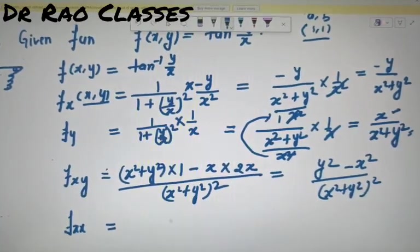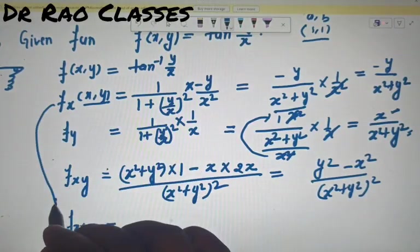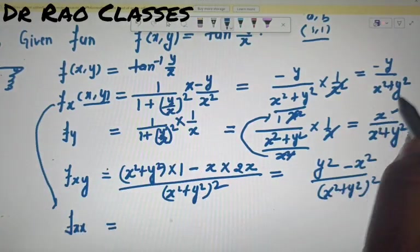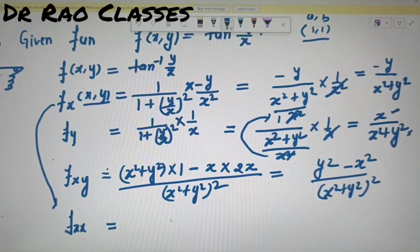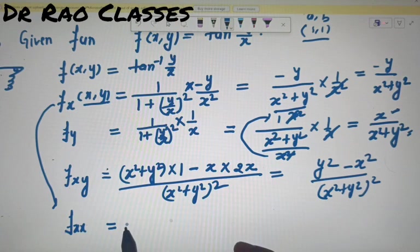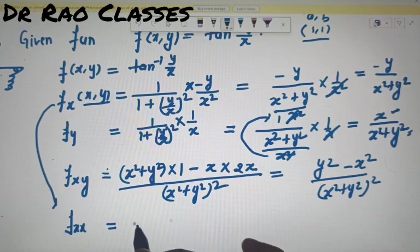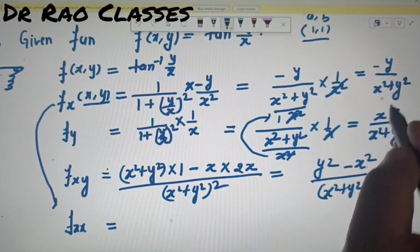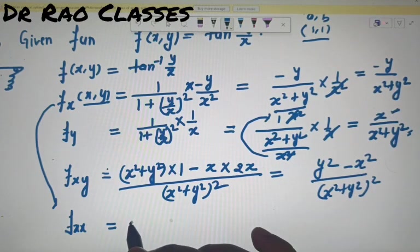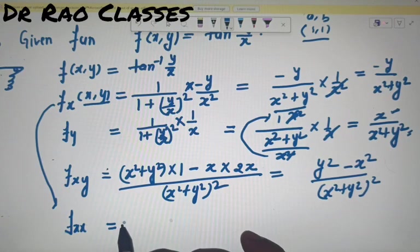अब f_xx भी निकालना है। f_x हमारे पास था: -y/(x² + y²)। इसको x के respect में differentiate करना है। -y constant treat होगा।